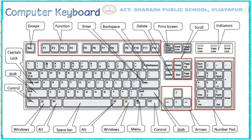They are Alphabetic Keys, Number Keys, Arrow Keys, Function Keys, and Special Keys. There are 26 Alphabetic Keys and 20 Number Keys — 10 keys on the keyboard and 10 keys on the number pad. There are 4 Arrow Keys, 12 Function Keys, and the remaining are Special Keys.